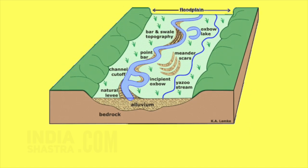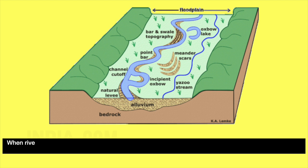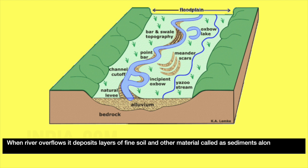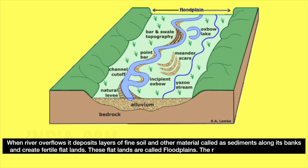The fourth landscape is a floodplain. When a river overflows, it deposits layers of fine soil and other material called sediments along its banks and creates fertile flatlands. These flatlands are called floodplains, and the levees are the raised banks along the riverbed.